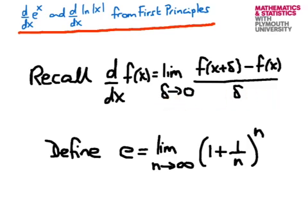We're also going to use this definition of the base e. So e is defined to be the limit as n approaches infinity of 1 plus 1 over n, all raised to the power n.